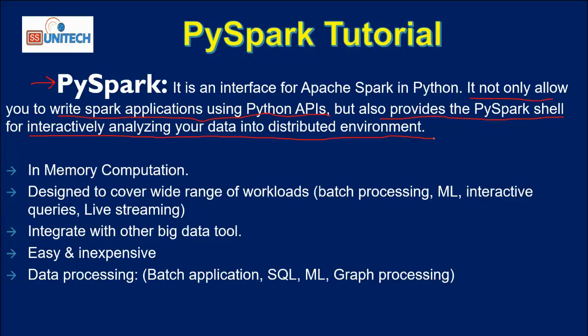What are the benefits and features of PySpark? The first feature is memory computation — PySpark processes data in memory, meaning in RAM, which makes processing very fast. If you want to process 8 GB of data but your RAM is only 4 GB, then 4 GB will be processed in RAM and the remaining 4 GB will be processed on disk.